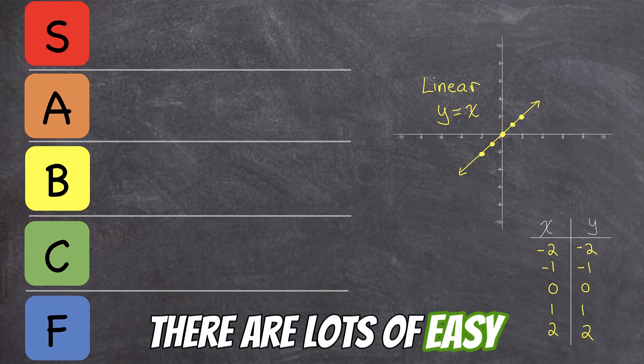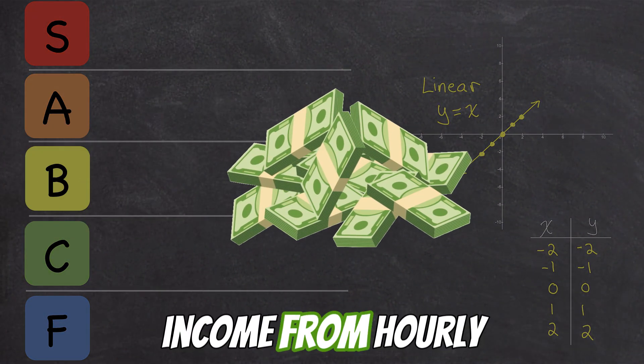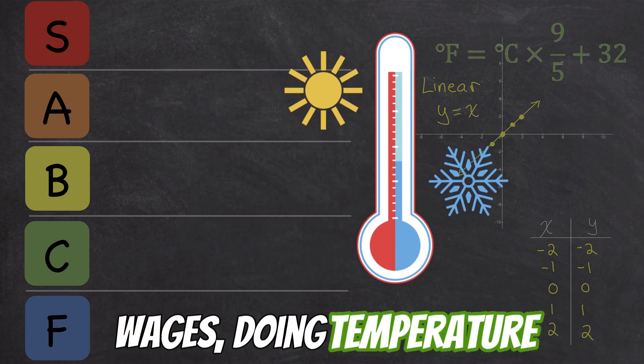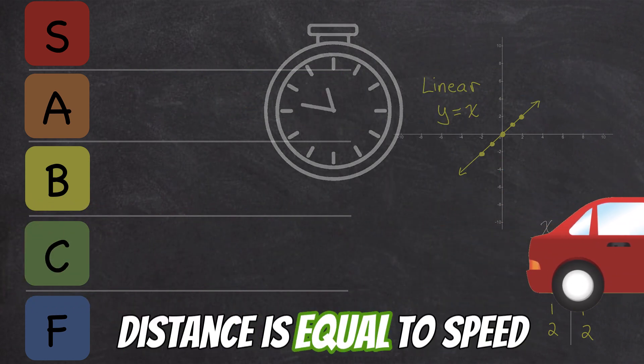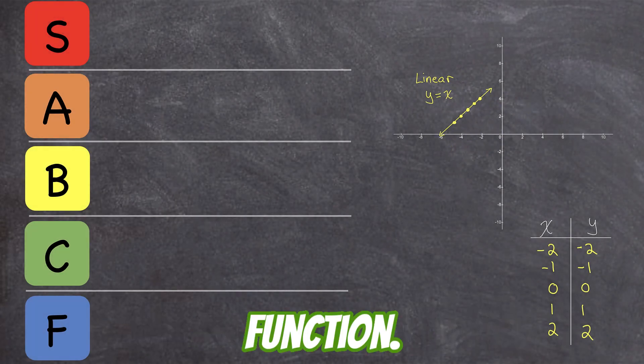There are lots of easy and useful applications, such as calculating income from hourly wages, doing temperature conversions, or using the distance formula, where distance is equal to speed times time. This is definitely an A-tier function.